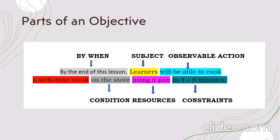Here is an example of a part of an objective: 'By the end of this lesson, learners will be able to cook a well-done steak on the stove using a pan in four to six minutes.' The subject is the learners, the observable action is 'will be able to cook,' the condition is 'on the stove,' the resources are 'using a pan,' and the time constraint is 'in four to six minutes.'